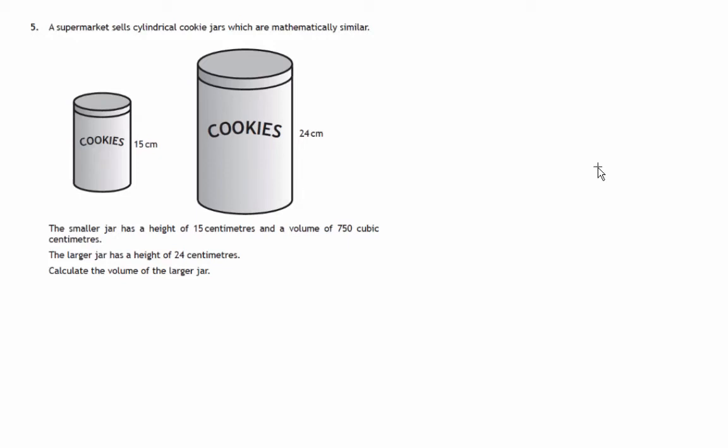This is question 5 from paper 2 of the 2014 National 5 Maths exam. We're given a couple of mathematically similar jars. We know their height, we know the volume of the smaller one, we're asked to find the volume of the large one.